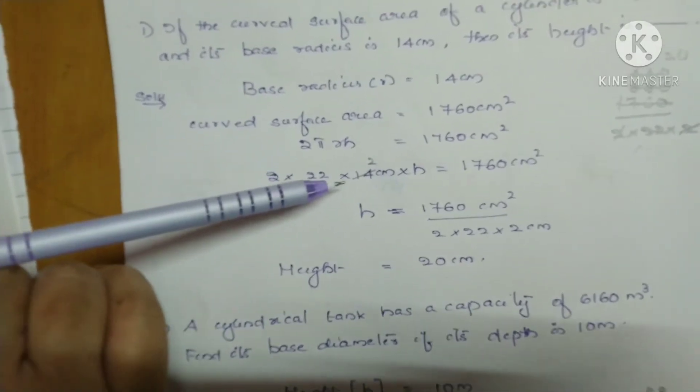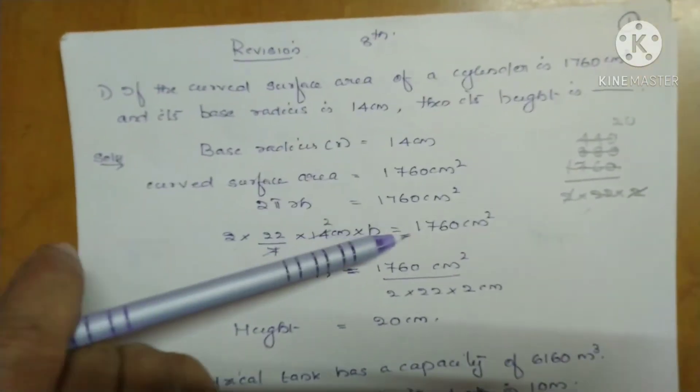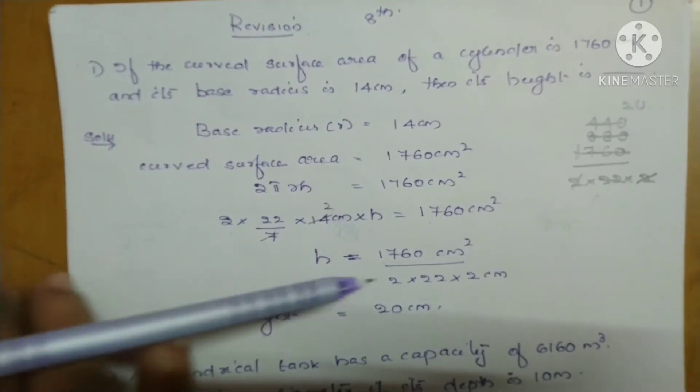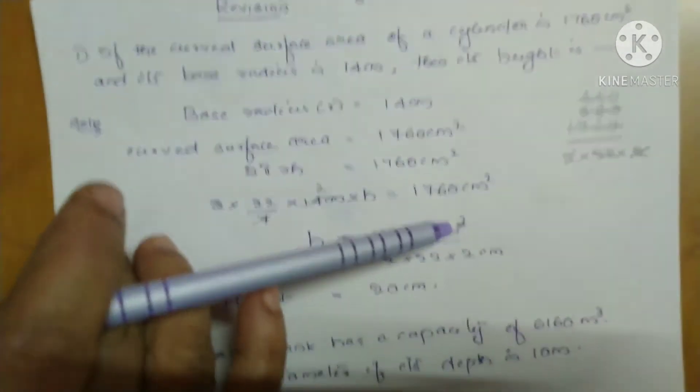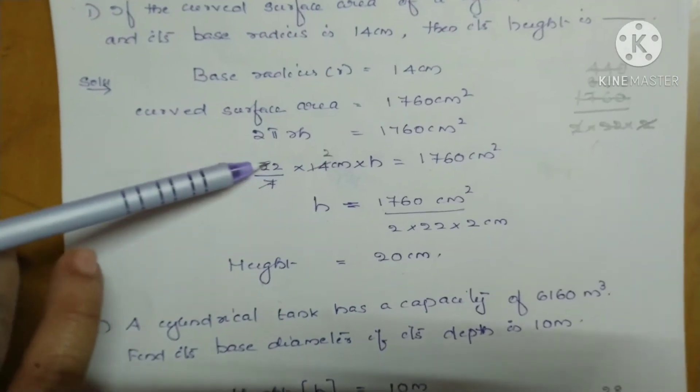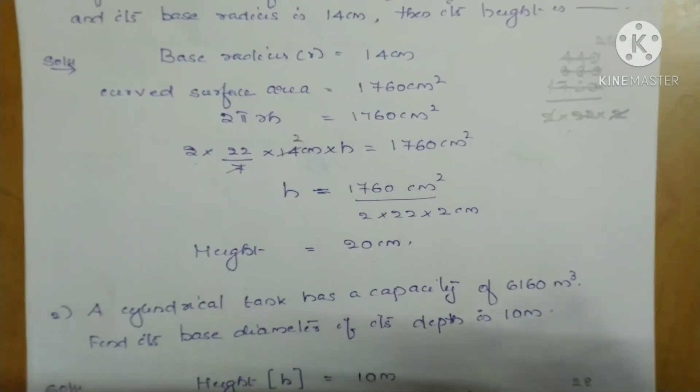So 2πRH is 1760 cm². Substitute the values: 2 into 22 upon 7 into R is 14 cm, given in the question. And actually we have to find out H, so we will keep it like that. So H is equal to 1760 cm² divided by 2 into 22 into 2 cm.